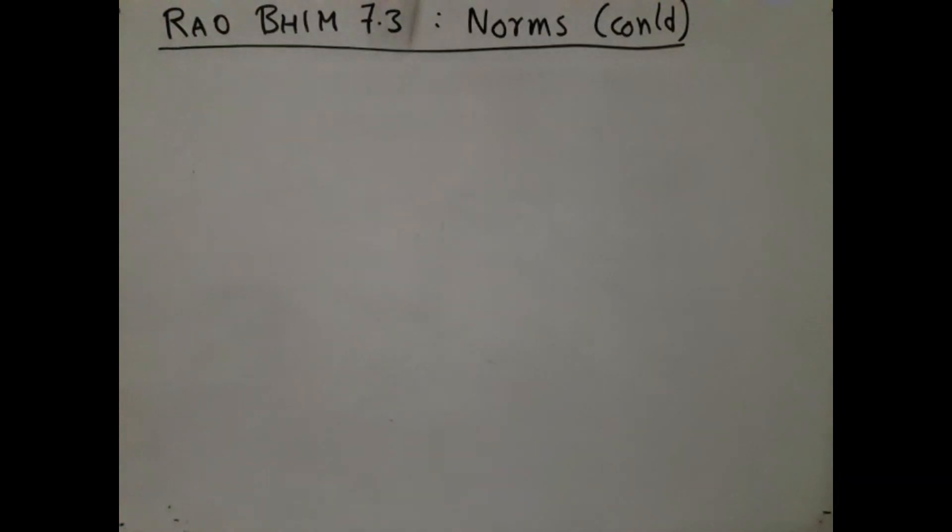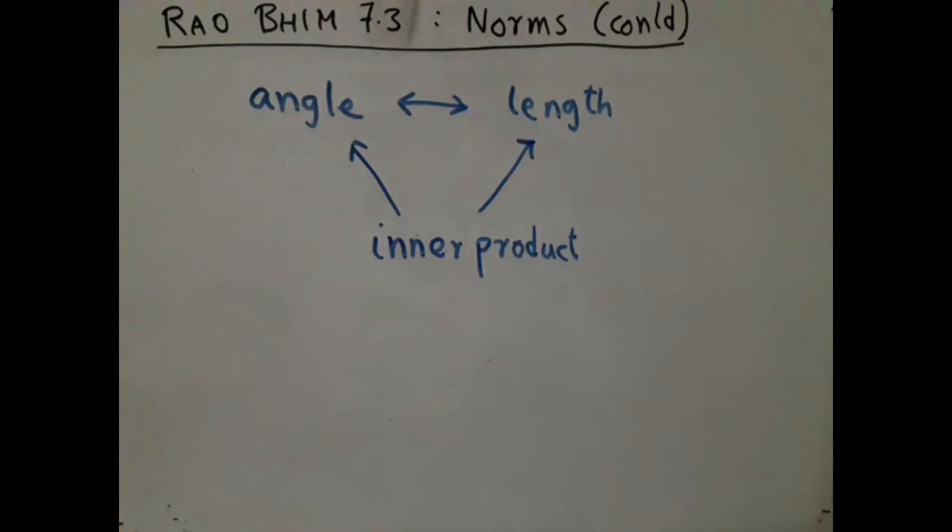We are continuing with chapter 7.3. The main theme here is the interplay between angles and lengths. Inner product is the linear algebraic tool unifying the two. We are using this tool to generalize these concepts to dimensions higher than 3.